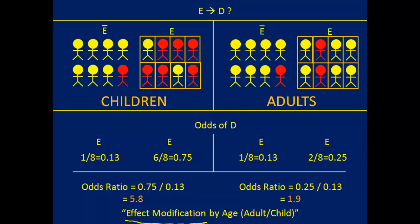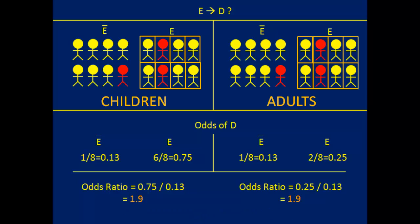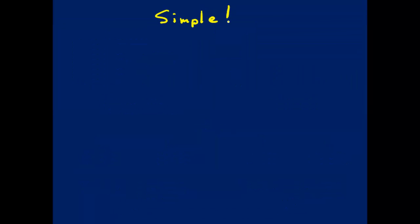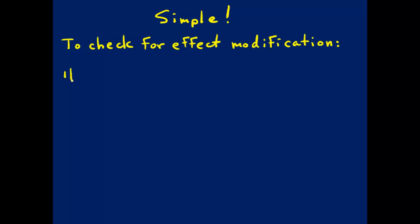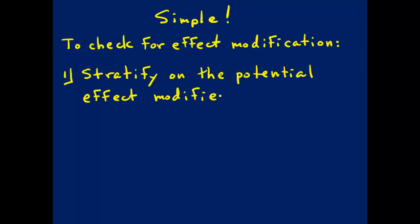Now it wouldn't have to be this way. We could have done this stratification by age — children and adults — and found that the effects were the same. If that were the case, we would say there is no effect modification by age. The effect of exposure on disease is the same within every level of age. So this is actually quite simple. To check for effect modification, you first stratify by the variable that will potentially modify the effect of exposure on disease, which we call an effect modifier.